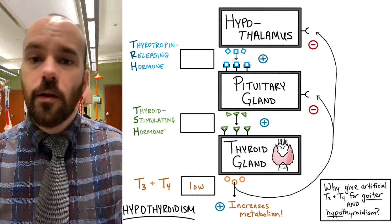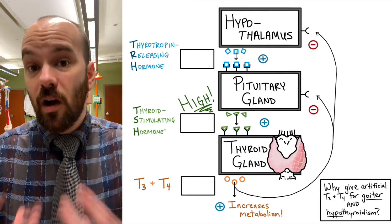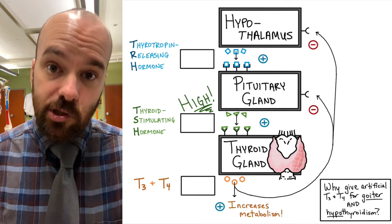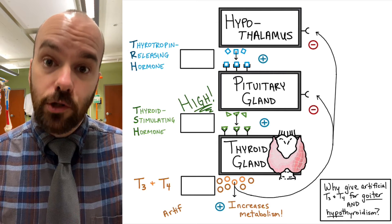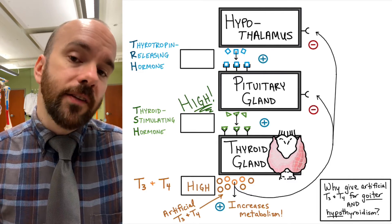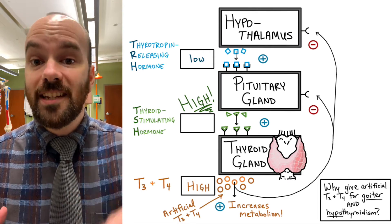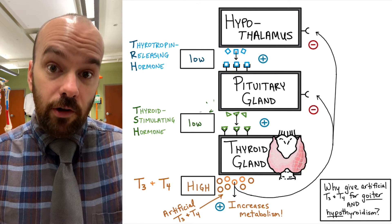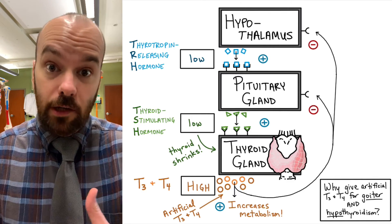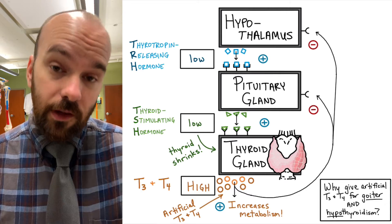Let's follow the feedback loop and see what happens. With a goiter, we'd expect TSH levels to be higher than they should be — something has caused the thyroid gland to grow, and usually that's TSH. If the patient is prescribed artificial T3 and T4, that causes T3 and T4 levels to be a little higher than they otherwise would. That will go back and inhibit the other hormones in the feedback loop, causing TRH to decrease and TSH to decrease. With less TSH, the thyroid gland won't be stimulated to grow — and over time it will start to shrink back to normal, making it an effective treatment for the goiter.